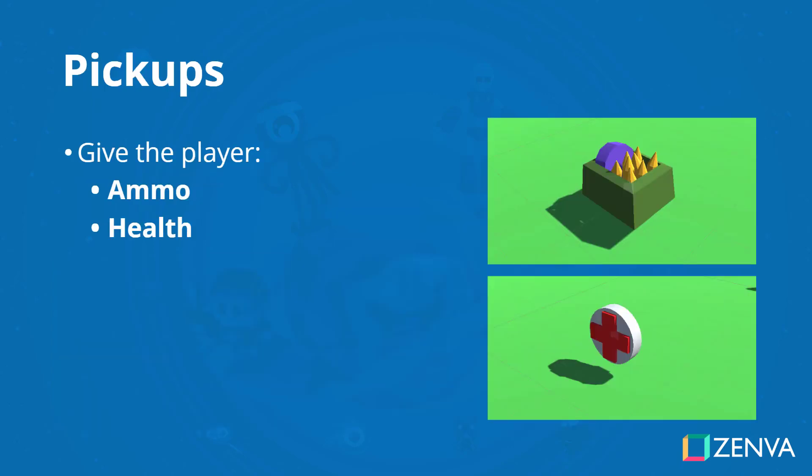To help the player out we will be creating pickups. These pickups will be able to give the player ammo or health. They will also be bobbing up and down and rotating to give them a better visual look and make it easy for the player to find.